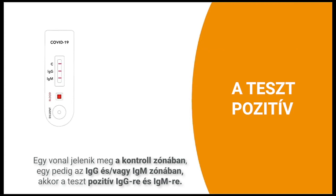If three lines appear on the cassette, one in the control zone, one in the IgG zone and one in the IgM zone, the test is positive for IgG and IgM.